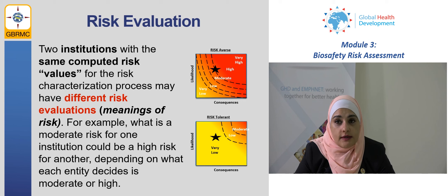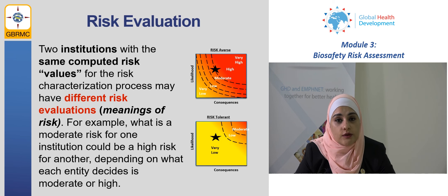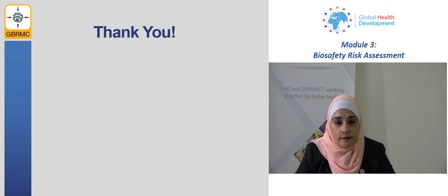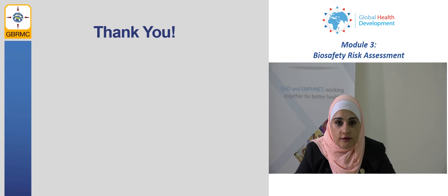The risk evaluation process is an intermediate step between risk characterization and risk mitigation. Here we interpret the results of risk characterization to determine the level of risk and decide if it is acceptable. The risk evaluation process is subjective — for example, if two institutions perform the same risk characterization and obtain the same computed risk level, each institution may evaluate that risk differently. One may consider the risk high while the other considers it low or medium. Risk evaluation results typically vary according to the institution, the individuals, and the community.